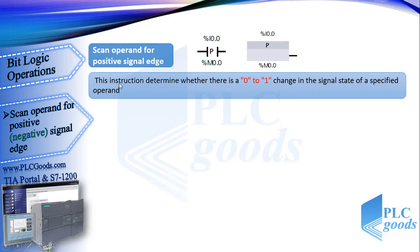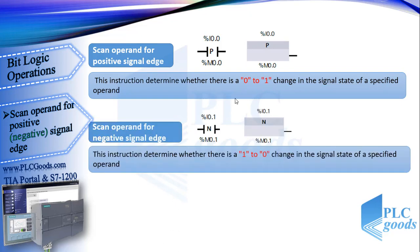This instruction determines whether there is a 0 to 1 change in the signal state of a specified operand. Similarly, we have scan operand for negative signal edge, which works based on a 1 to 0 change in the signal state of a specified address.